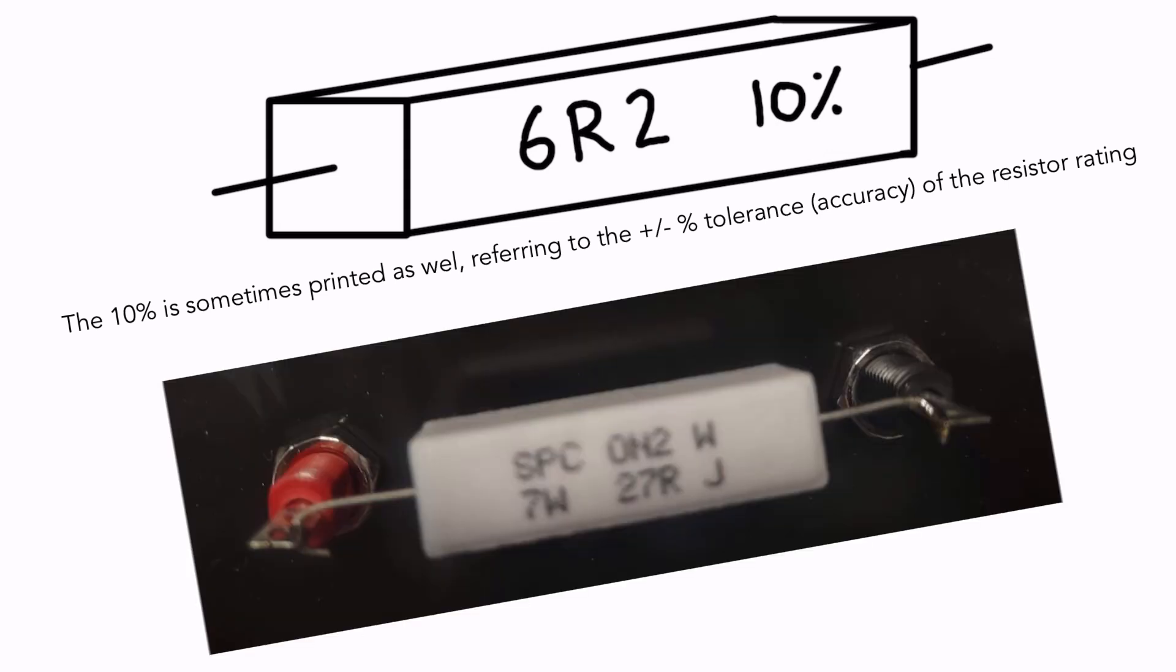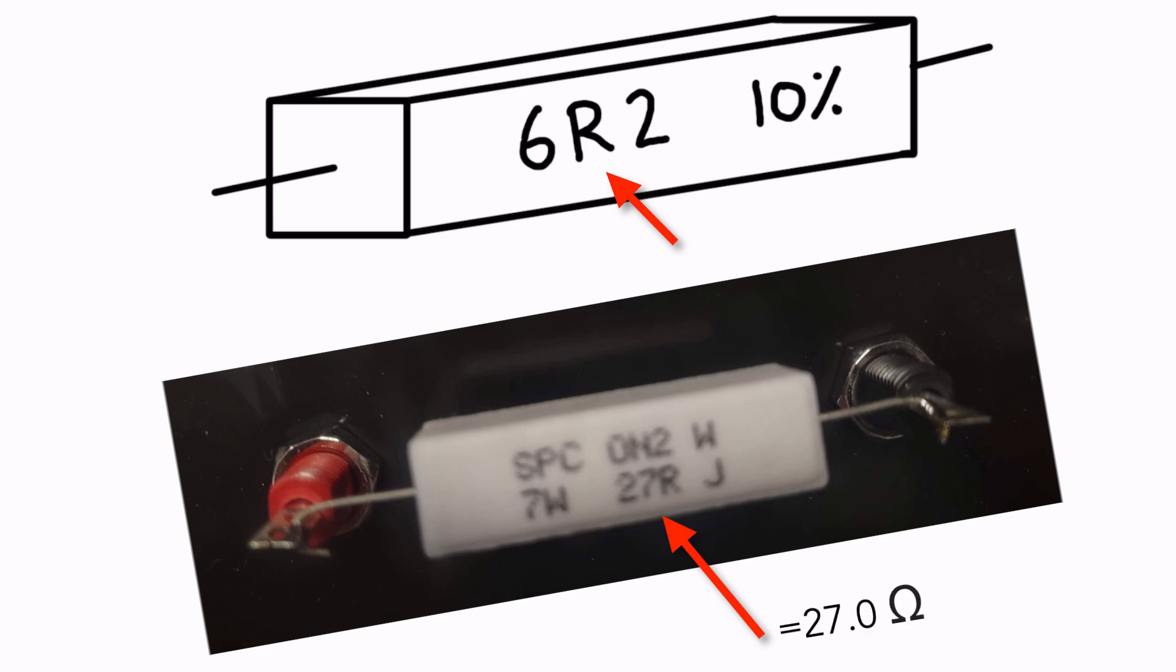So in real life, here's an example of what one would look like as well. This one is 27R, whereas the one that I've drawn here above is 6R2. So for 27R, that would be 27.0 times 1. For 6R2, the R is like weirdly the position of the decimal place. So 6R2 would be 6.2, and the R also indicates it's times 1 multiplier.